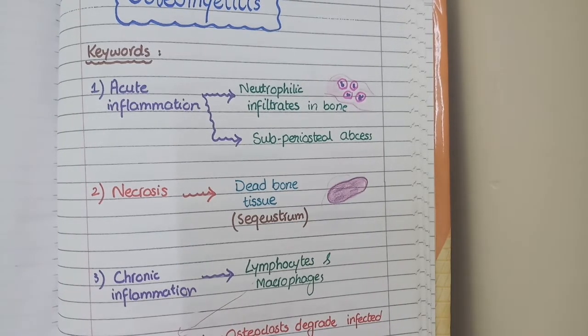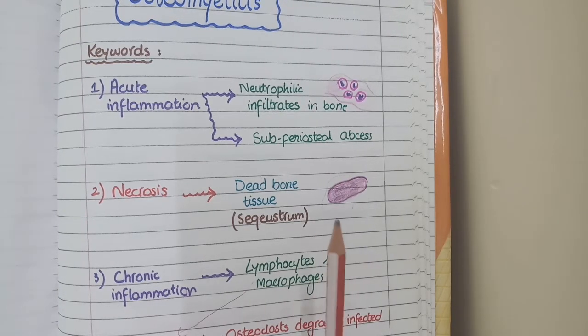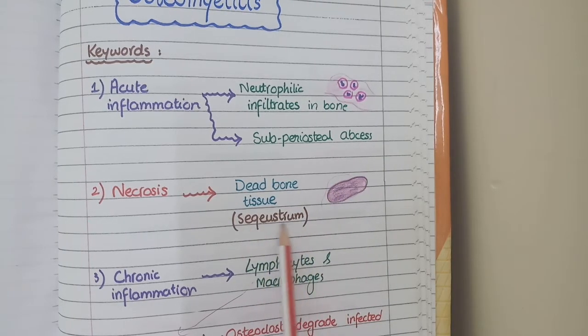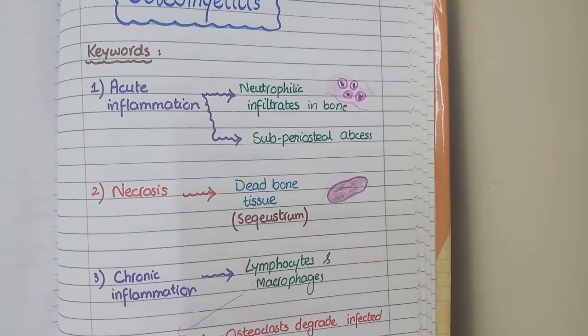During the destruction caused by bacteria and attacking neutrophils, a part of bone becomes dead and necrotic. This piece of dead and necrotic bone is called sequestrum. So sequestrum is a dead piece of necrotic bone.